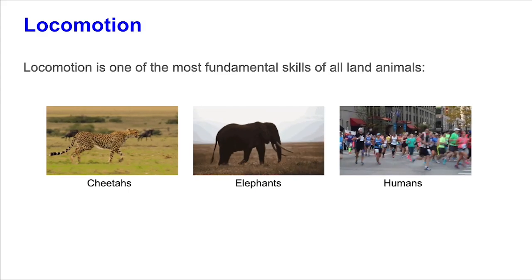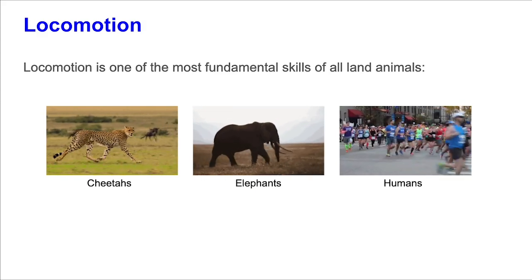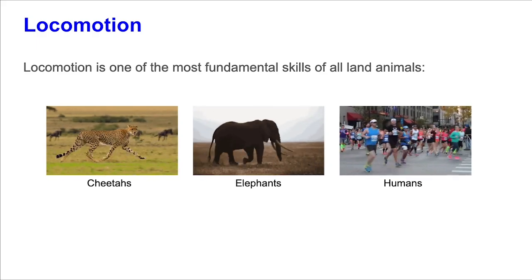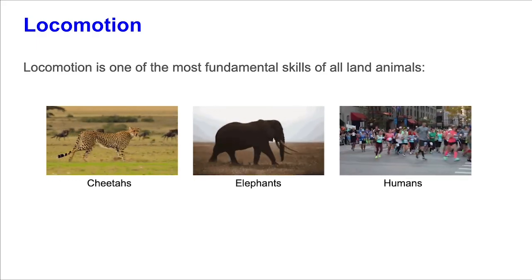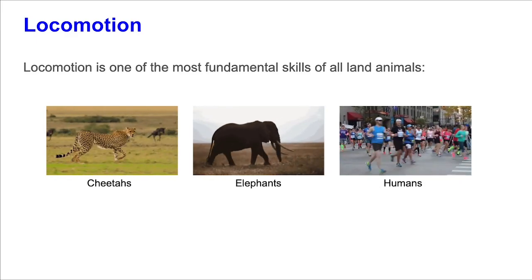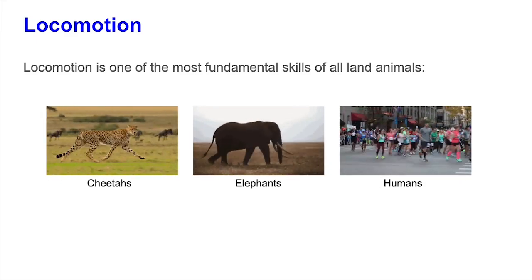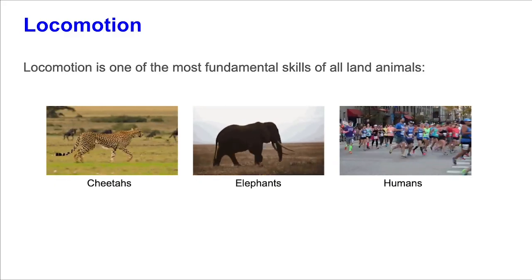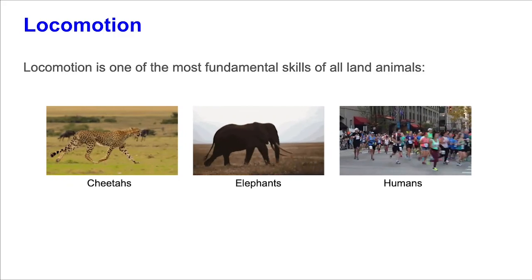In order to introduce the audience to our work, we first discuss the motivations and background. Locomotion is one of the most fundamental skills of all land animals, having evolved naturally in multiple species, both for quadruped and bipedal stances. This includes cheetahs, which are the fastest land animals on Earth, elephants, which are the largest land animals on Earth, and also us as humans.